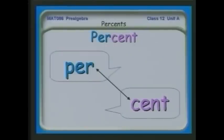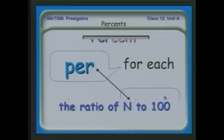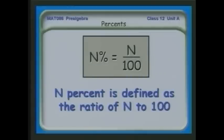Let's take a look at what percent means. 'Per' means 'for each,' and 'cent' comes from the Latin for 100. So a percent means 'for each 100.' N percent is defined as the ratio of N to 100. So if I have 25%, that mathematically means 25 pieces out of 100 pieces. 75% means 75 pieces out of 100 pieces.